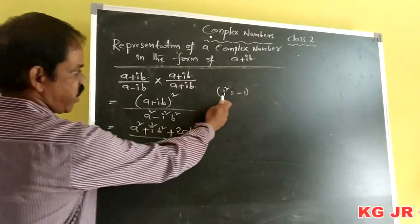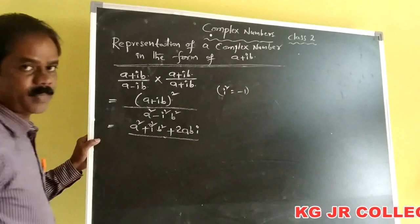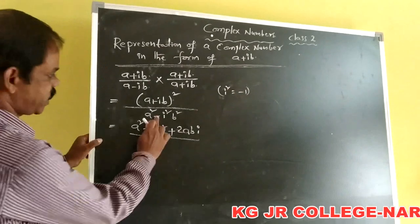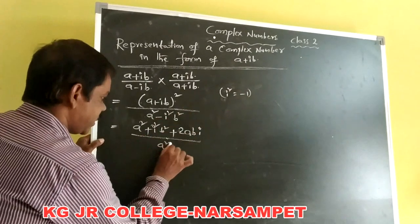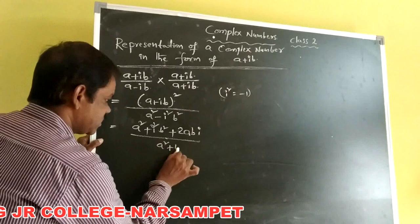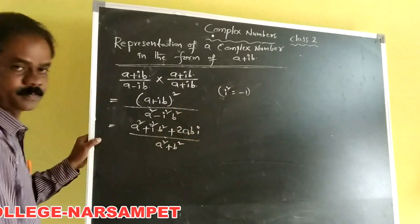What is the value of i squared? Minus 1. So minus and minus becomes plus. Therefore we get A squared plus B squared in the denominator.